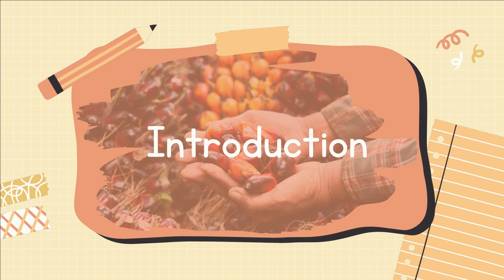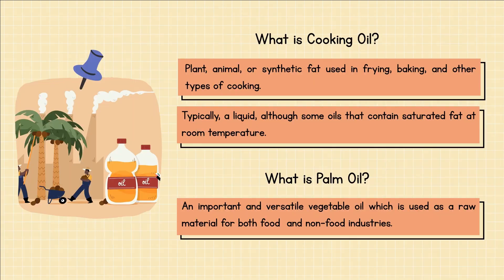The first part is introduction. Are you familiar with the meaning of the term cooking oil? Cooking oil is a form of fat made from plants, animals, or synthetic materials and is used in frying, baking, and other sorts of cooking. It is typically a liquid, although some oils contain saturated fat at room temperature.